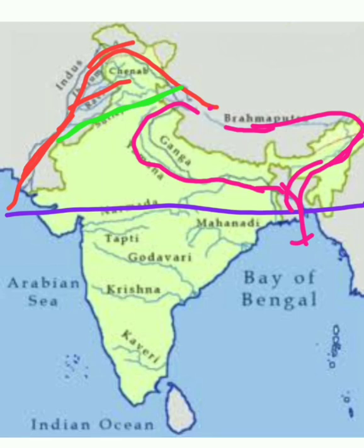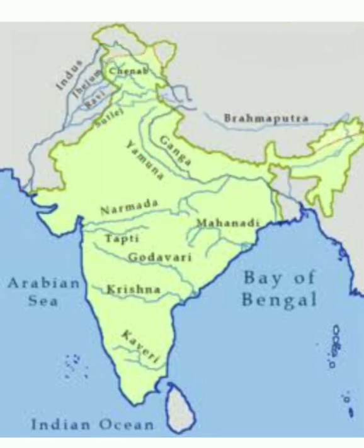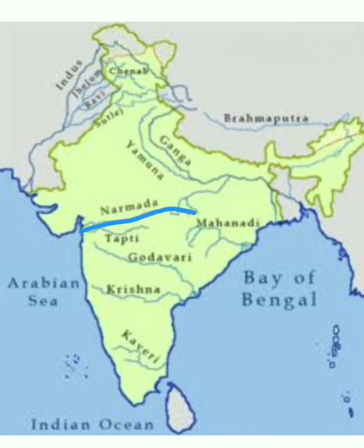Let's move towards the next part — the Peninsular rivers. Under these Peninsular rivers, we have the main important river that originates on the eastern side — the largest river flowing towards the western side. It originates near Amarkandak in Madhya Pradesh and moves towards Gujarat and Maharashtra, merging with the Arabian Sea. The next important river is the Tapi river, also in the western Ghats. It originates in Madhya Pradesh and then moves towards the Arabian Sea.